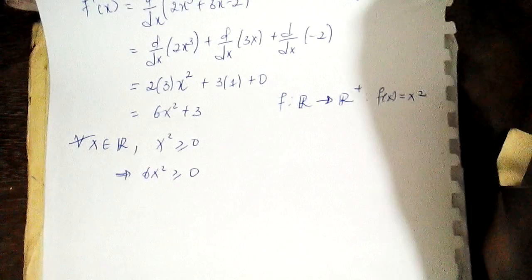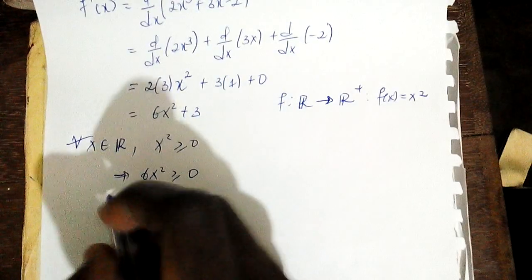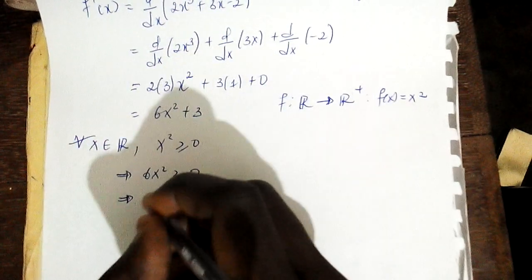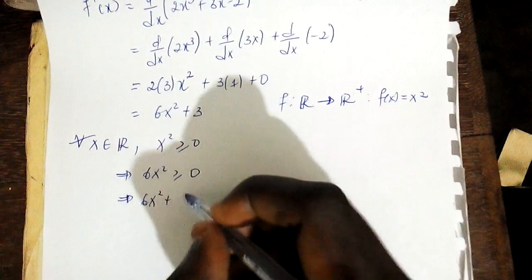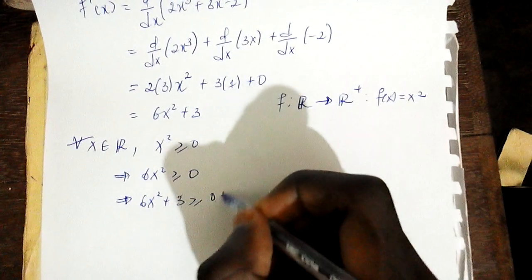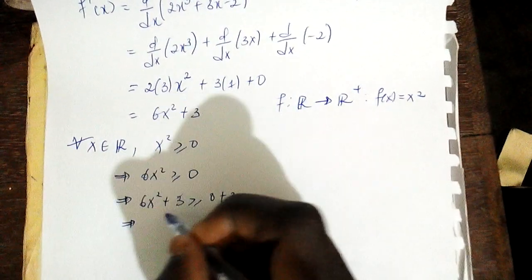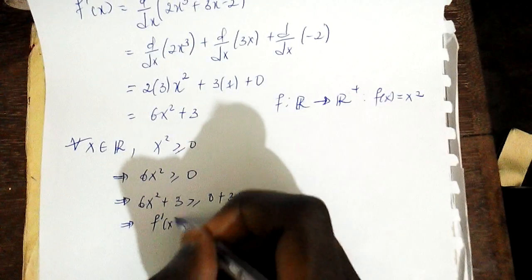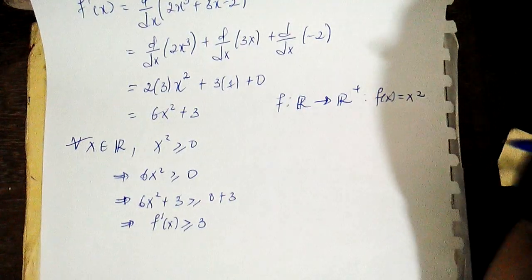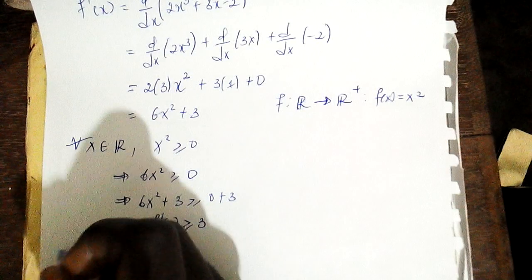So 6x² + 3 ≥ 0 + 3, which means the left-hand side, which is f'(x), will be greater than or equal to 3. So clearly f'(x) ≥ 3. Now since 3 is strictly greater than 0, I can conclude that f'(x) is strictly greater than 0.